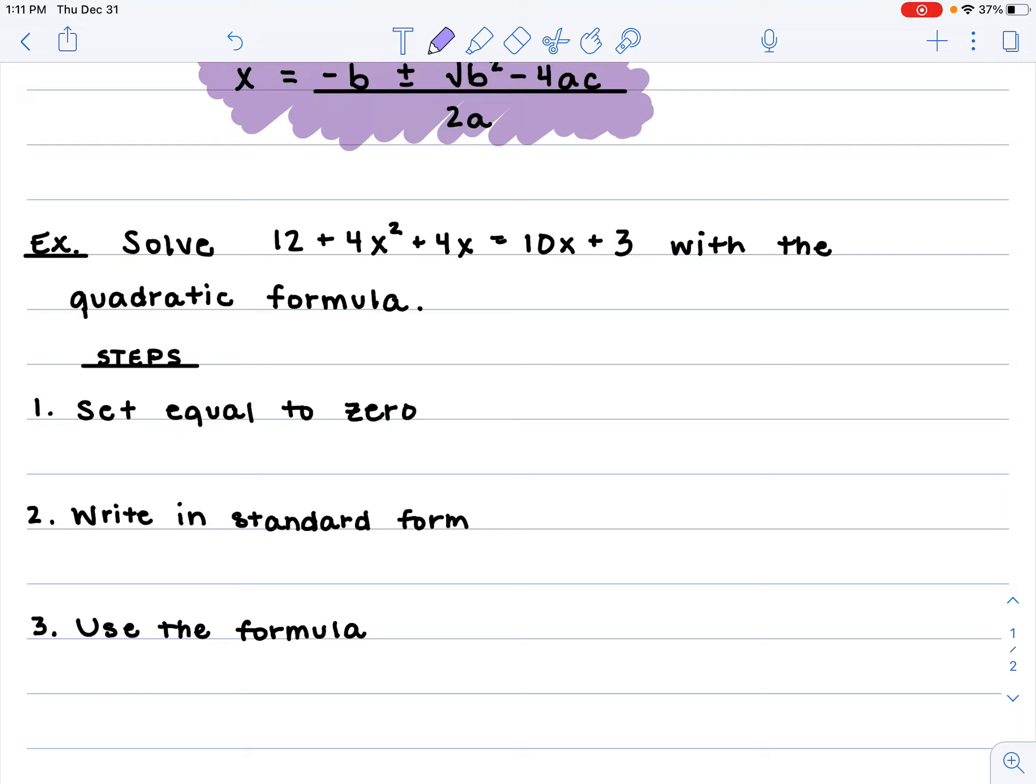The steps are: set equal to 0—you want your equation to equal 0, just like we do in factoring. Next, write it in standard form to make sure our a, b, and c values are in the correct location. From there, we're going to plug in those a, b, and c values and solve that formula. Plug in and chug.